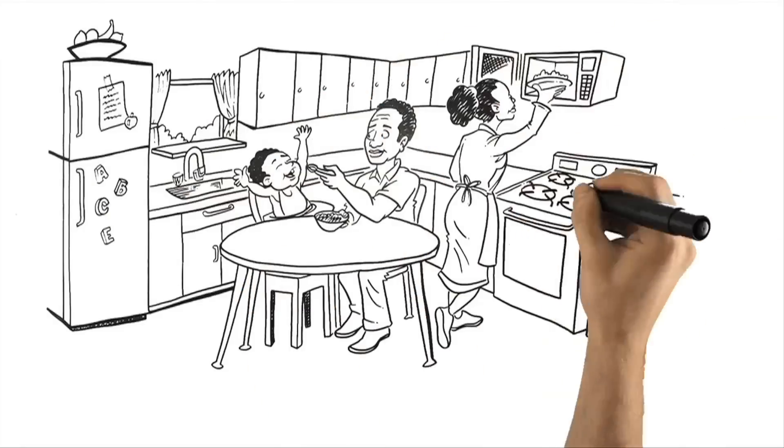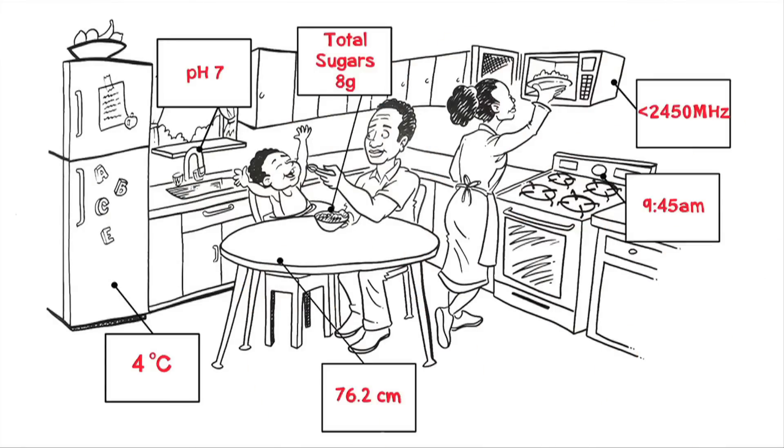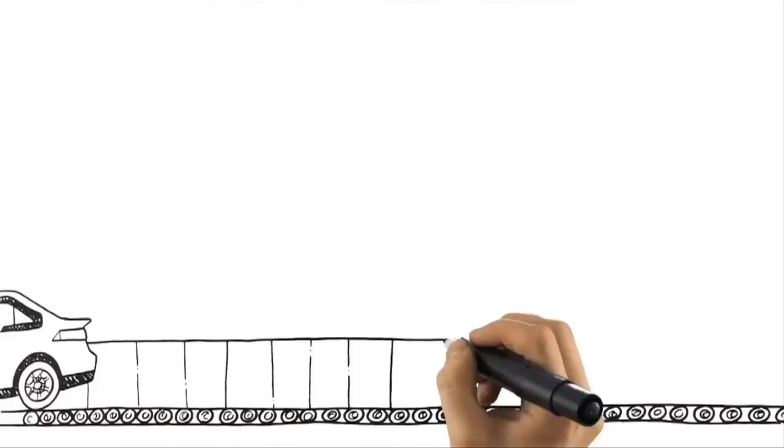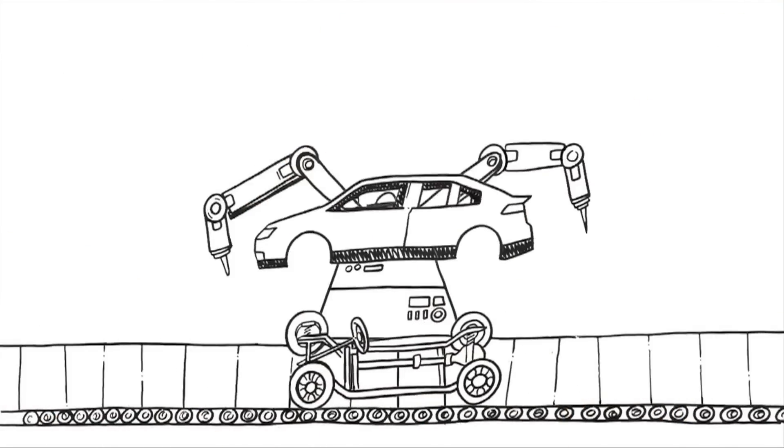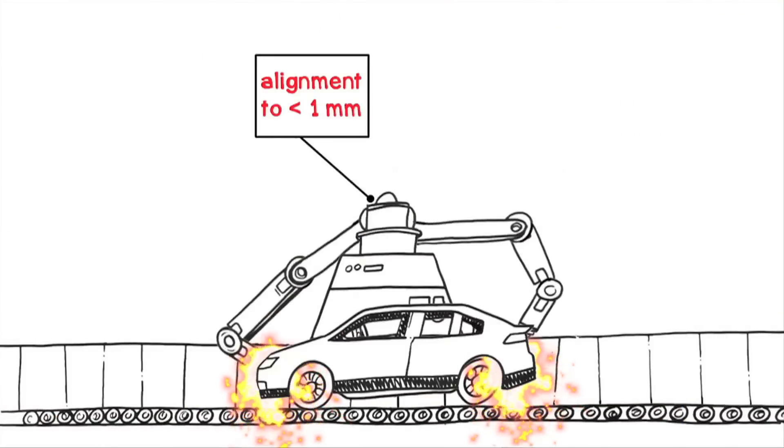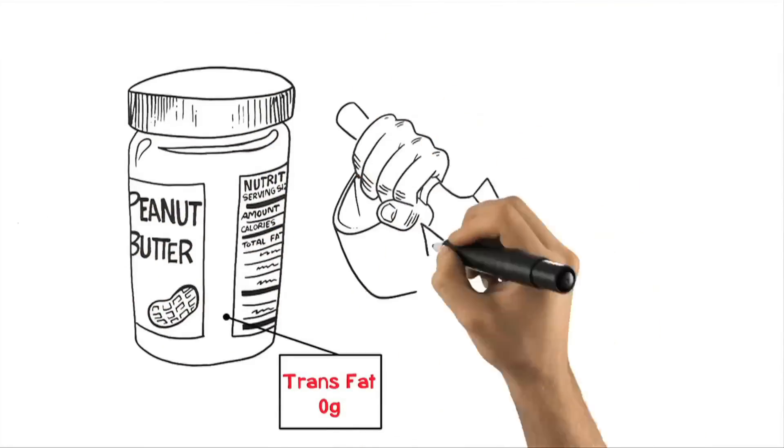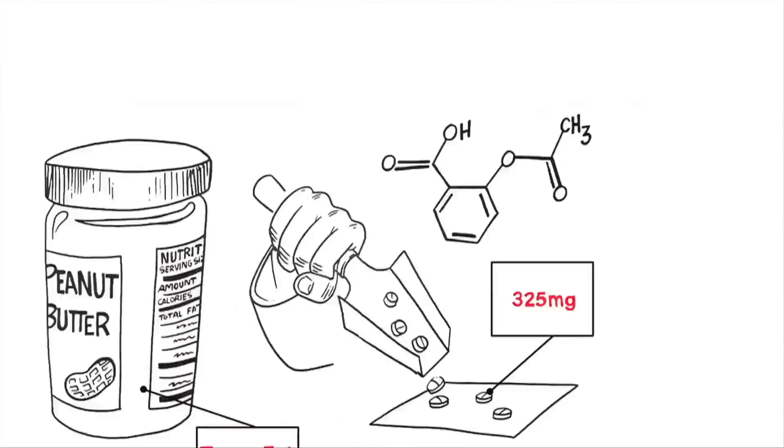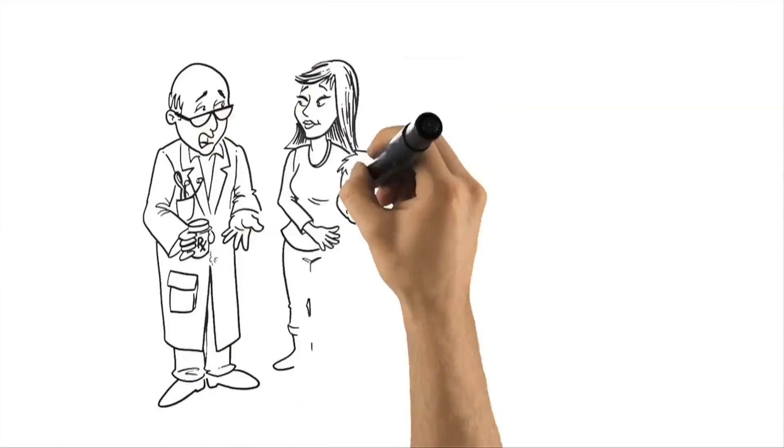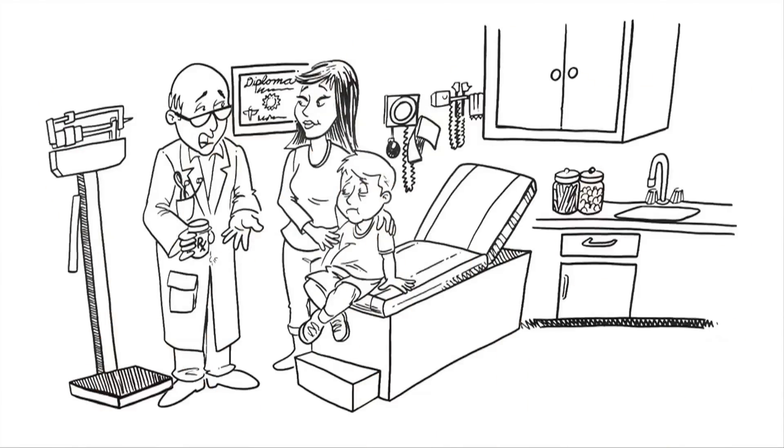Measurements permeate every aspect of our lives, from how we make things, to how we sell things, to how we regulate things. And NIST measurements give us a way to know we can trust this system to be accurate.